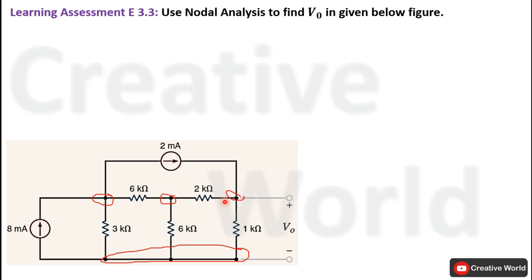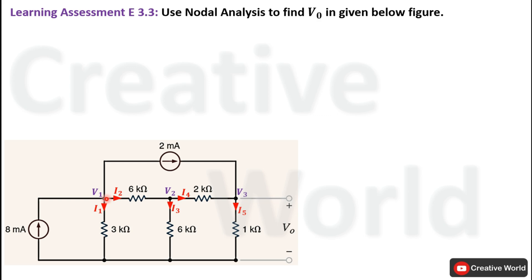Now we will move towards the second step. In this step, we have to label all node voltages as well as all unknown branch currents along with their directions. We have labeled the three node voltages as V1, V2, and V3, and all branch currents are assumed with their directions. If we take any branch current in the wrong direction, its answer will be negative, indicating the wrong assumed direction.